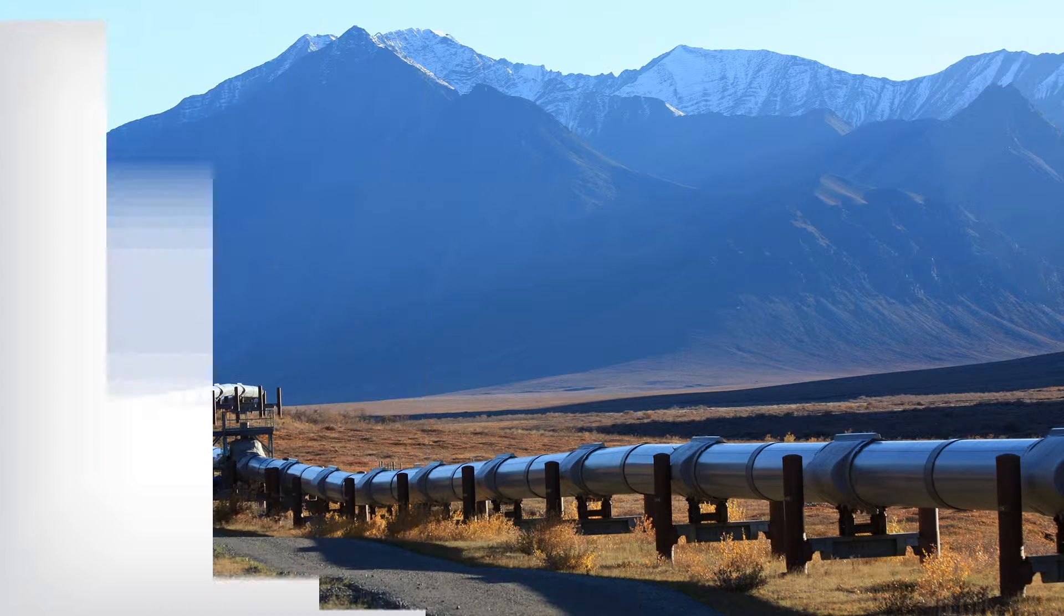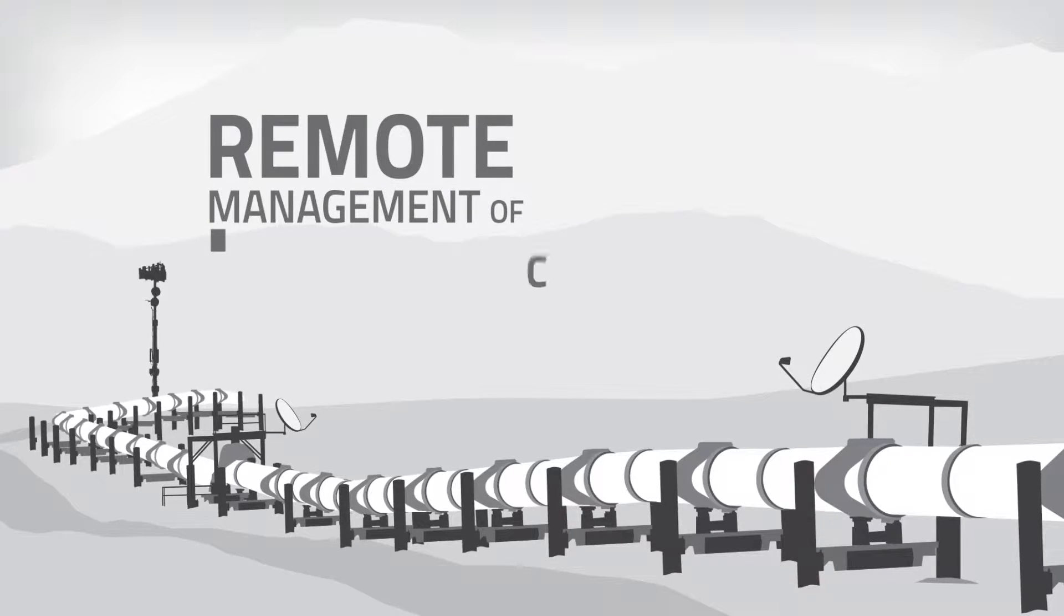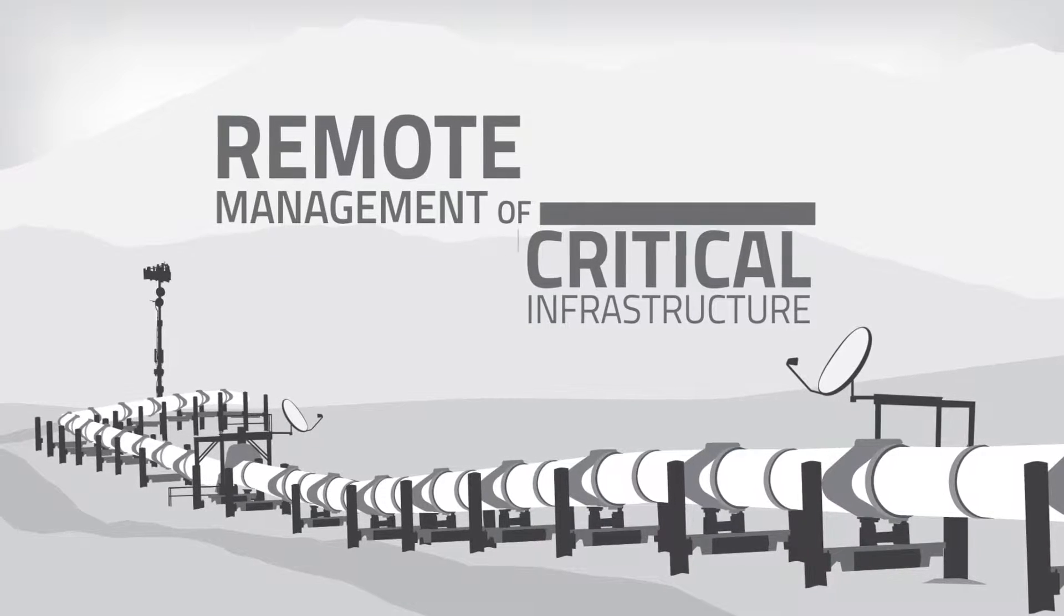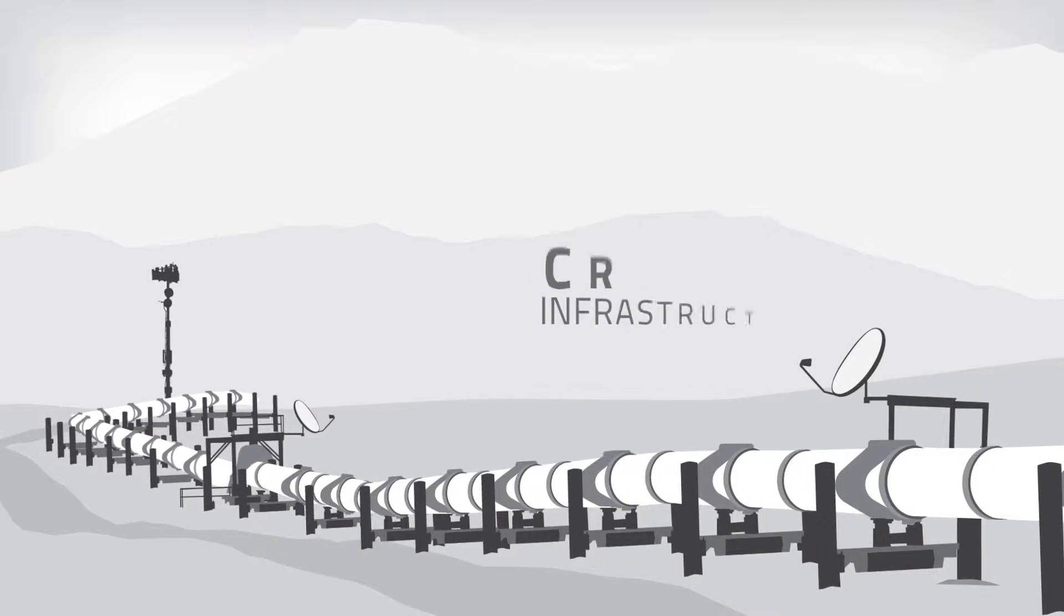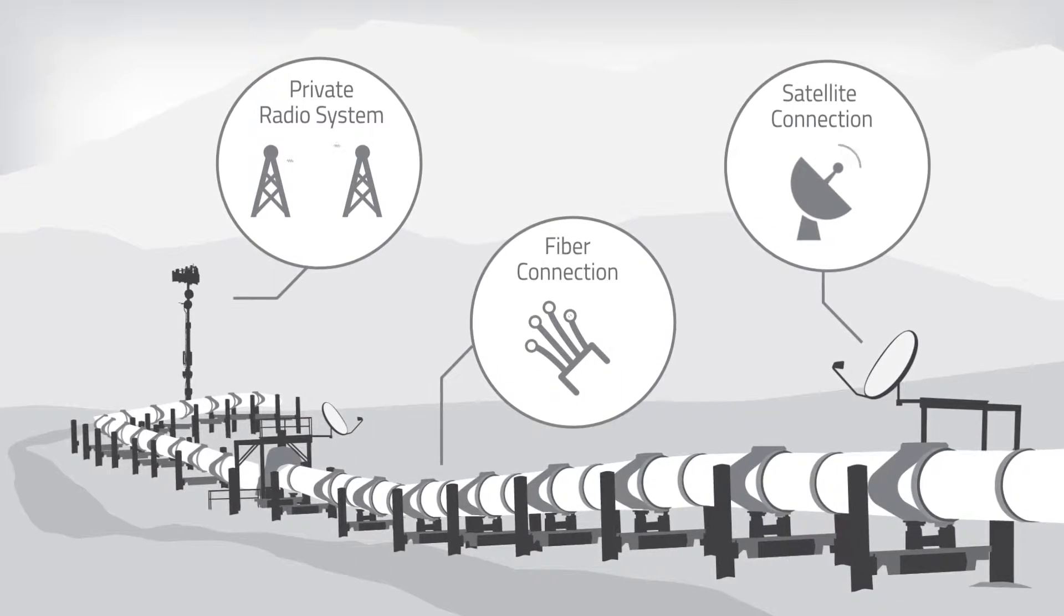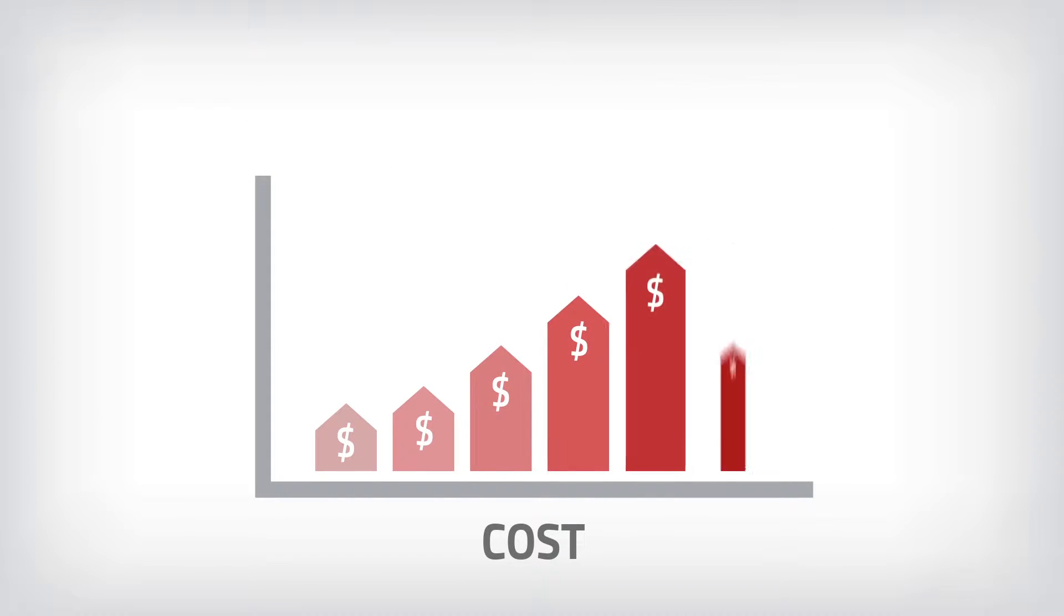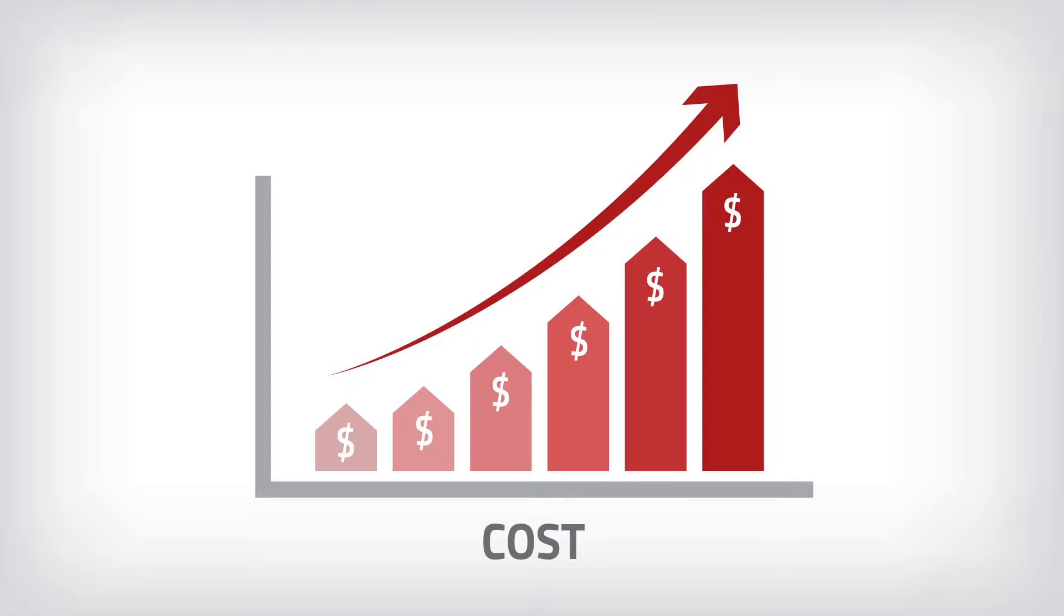So, how have these challenges been addressed in the past? To date, organizations have addressed remote monitoring and management of their critical infrastructure in a number of ways, including fiber-optic networks, private radio systems, and satellite communications. While these solutions have provided connectivity, they are typically expensive and often difficult to deploy and maintain.